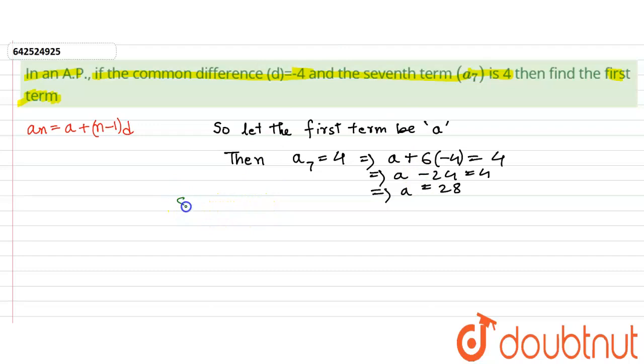So that is our final answer: the first term is 28. And that brings us to our conclusion. Thank you.